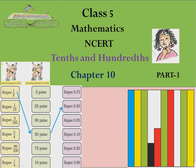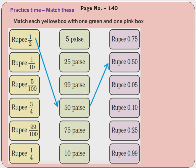Welcome to Class 5 Mathematics NCERT, Tens and Hundreds, Chapter 10 Part 3. Practice time — match this, page number 140. Here you have to match the yellow box with the green one and the green one with the pink box. One has been done for you.